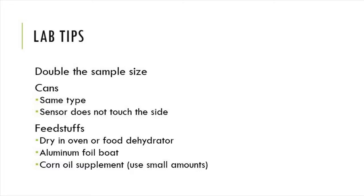Also, make sure the sensor does not touch the side of the can itself. Feedstuffs you're going to want to dry in an oven or a food dehydrator. You can also dry them in a microwave if you dry them multiple times and try to get them to hit the same mass three times in a row. If you dry them in the oven, do so at a low setting like 200 degrees Fahrenheit overnight. This really gets some moisture out and allows it to burn a little bit easier. If you have small micron size feeds, consider using aluminum foil as an iron gauze, which is great for this lab.